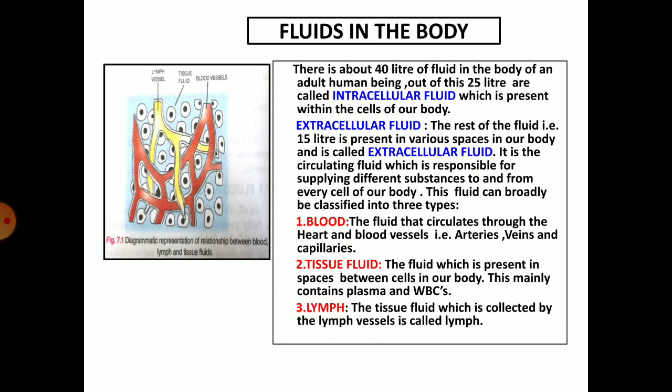The fluid is broadly divided into three categories. First, blood — the fluid that circulates through the heart and blood vessels, moving through arteries, veins, and capillaries. Second, tissue fluid — the fluid present in spaces between the cells in our body, mainly consisting of plasma and WBCs. If you see this diagram, the red colored blood vessels are the ones through which blood circulates. The blue colored structure is the tissue fluid. And the yellow colored tubes are the lymphatic vessels, which collect the tissue fluid. When it enters into the lymphatic vessels, it is known as lymph.